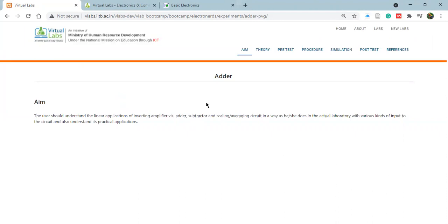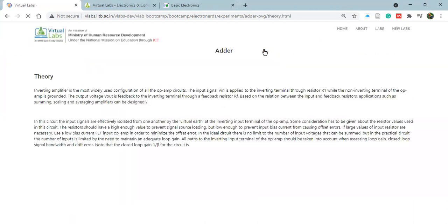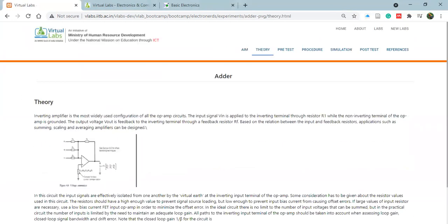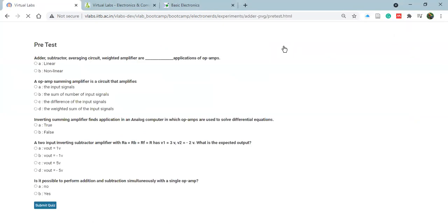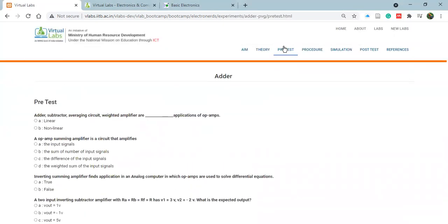Over here, you get the aim of the experiment. You have to write this in your exam. You have the theory, a great theory is given, a circuit is given, and the basic working formula is provided over here. It's a three input inverting adder provided here. There's a small previous section. In every other experiment also, you have noticed this. You can also go for this test to see how much you know about this adder and clear your concept.